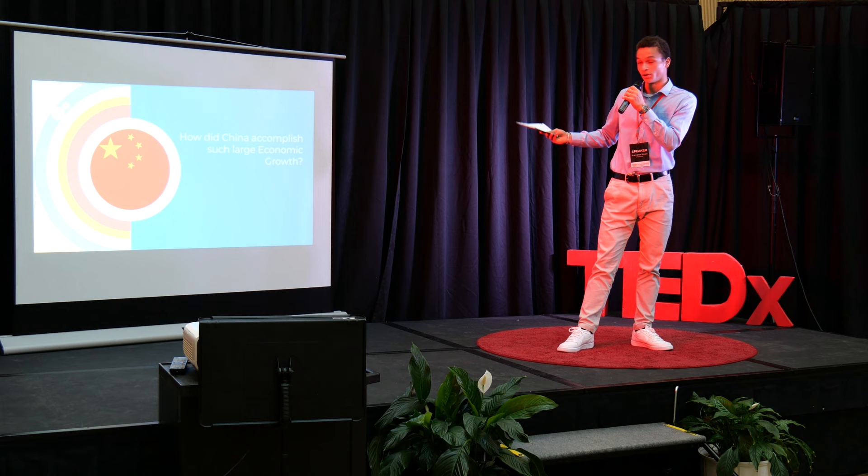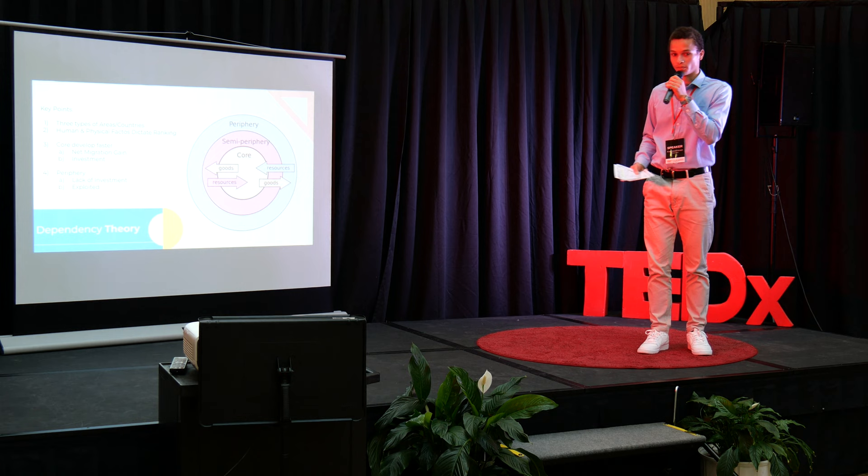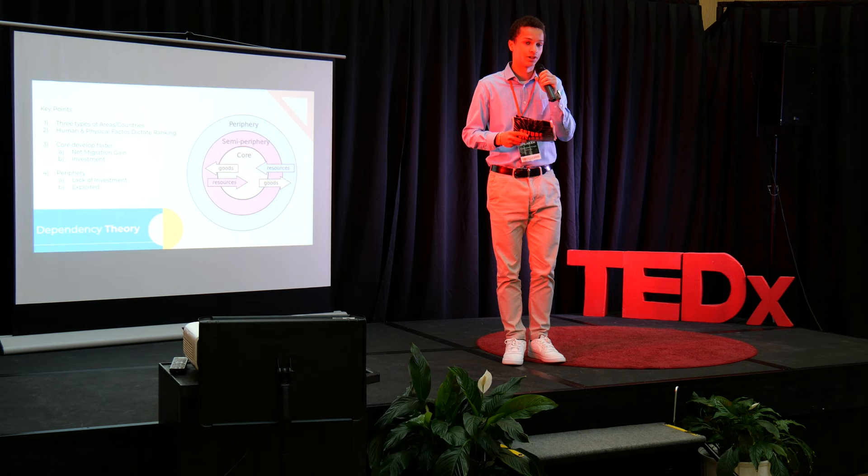How did China accomplish such large economic growth? We use the dependency theory in order to examine this question. The dependency theory has four basic premises. The first premise is that there are three categorizations of countries: core countries, semi-periphery countries, and periphery countries. These categorizations rely on physical and human factors.